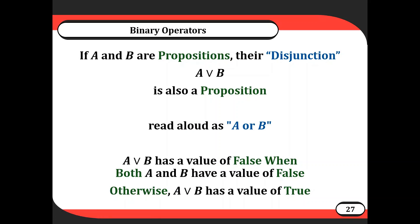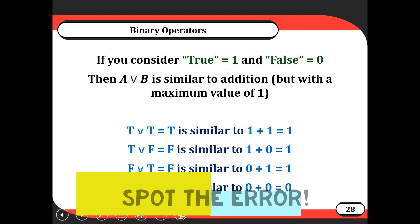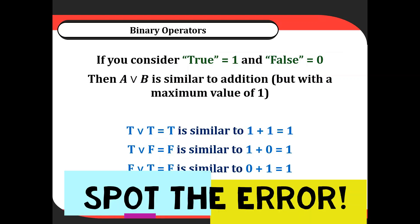There's also an OR operator. If A and B are propositions, their disjunction 'A or B' is also a proposition. A OR B has a value of false when both A and B are false; otherwise A OR B has a value of true. So if A is true or B is true, then A OR B is true. If neither of them are true, then it's false. They can both be true as well.